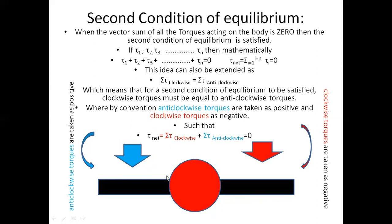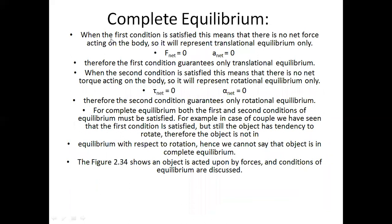When the first condition is satisfied, there is no net force acting on the body, representing translational equilibrium — meaning no net acceleration in any direction. The first condition guarantees only translational equilibrium. When the second condition is satisfied, there is no net torque and no rotational acceleration acting on the body, representing rotational equilibrium.